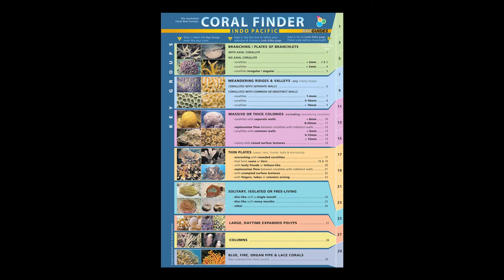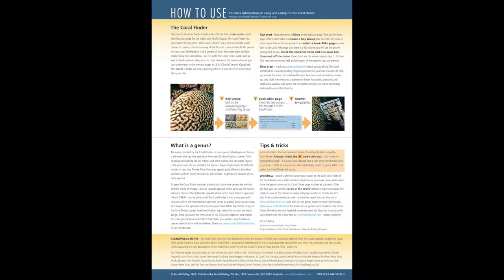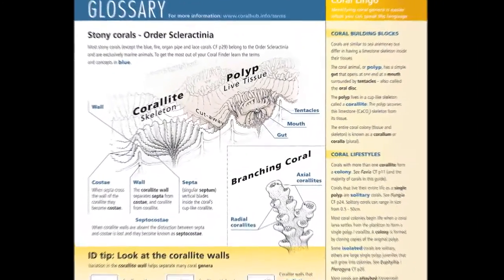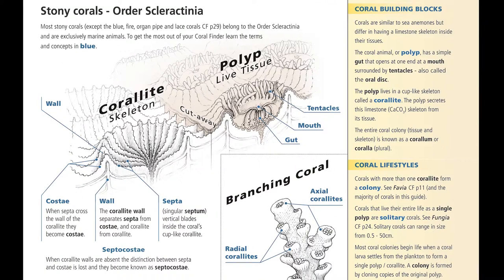First, you need to know the basic anatomy of a coral. Take the time to read the 'How to Use' page inside the front cover of the Coral Finder — it's brief and to the point. Then read the glossary page, and pay particular attention to the illustration of the coral skeleton. Once you grasp the simple terms in blue, you will be able to use the Coral Finder to identify all the common coral genera in the Indian and Pacific Oceans. Not bad for a five-minute read.